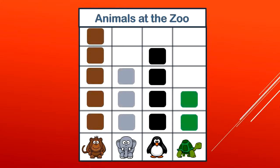Monkeys, elephants, penguins, turtles. Now we see that the information is going from bottom to top. The word for that is vertical.